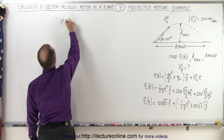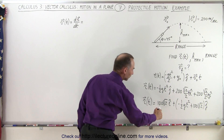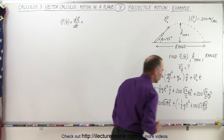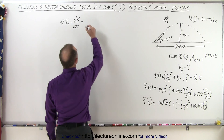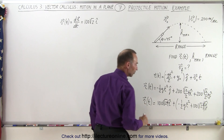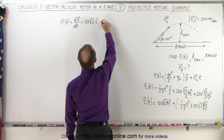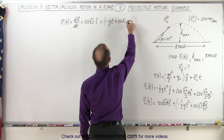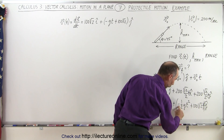The velocity as a function of time is the derivative of the position vector with respect to time. Taking that derivative: in the i direction we get 100 times root-2, since the t drops out leaving just the constant. In the j direction, the derivative of minus one-half gt-squared is minus gt, so we get minus gt plus 100 times root-2 in the j direction.